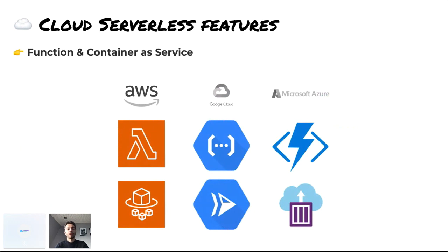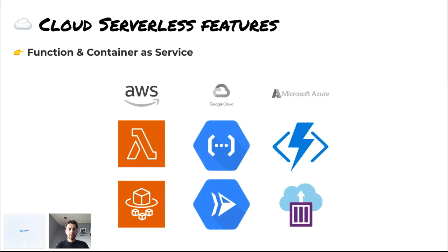One big feature of cloud providers is what we call Function as a Service or Container as a Service, where you simply upload your code and don't have to think about the environment or infrastructure behind it. You upload your code and can trigger it via an API or a run button. It's quite easy to deploy and run your code. Container as a Service is similar, but instead of just code, you can provide your entire environment — for instance, specifying a Docker image — and you're good to go without dealing with the underlying infrastructure.